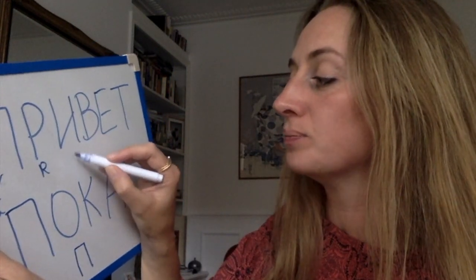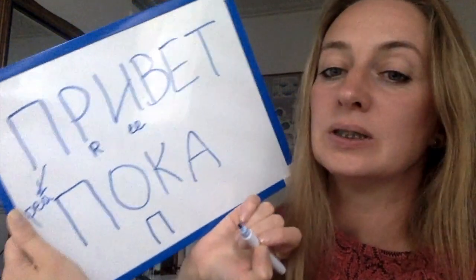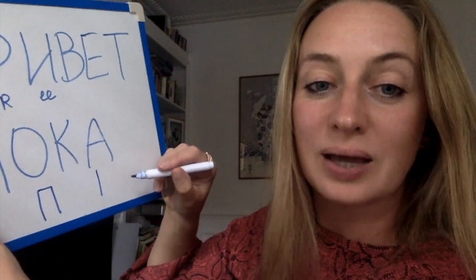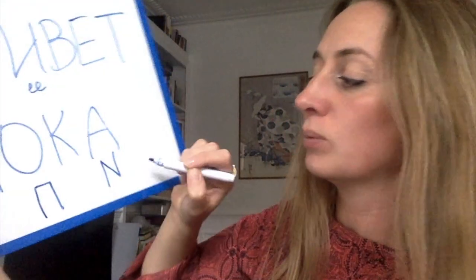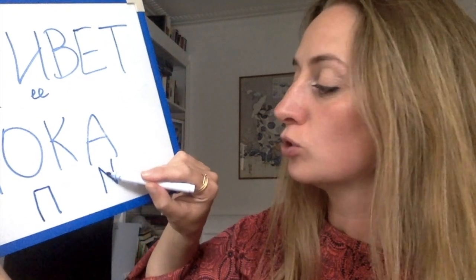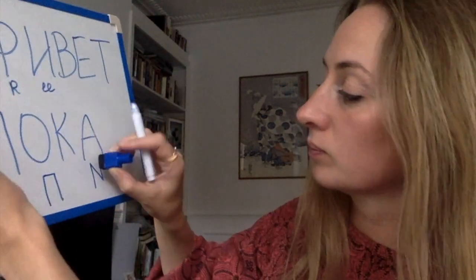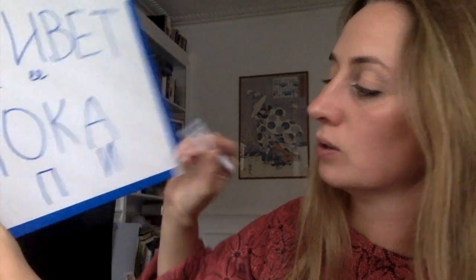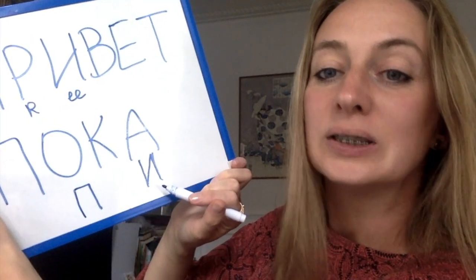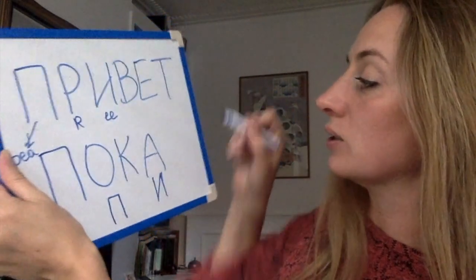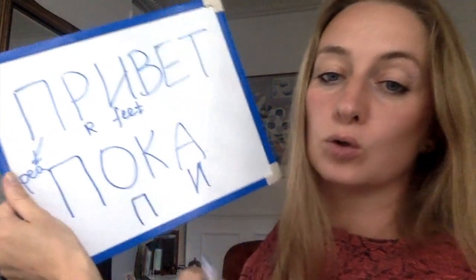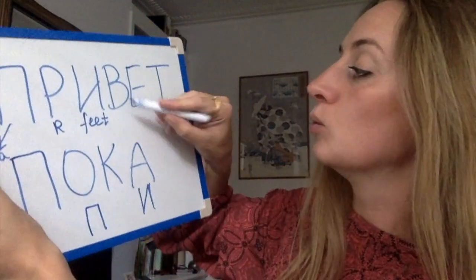The third letter is a vowel — letter И. It's like English E written reversed — like a reversed N. The sound is similar to the 'ee' in 'feet' or 'meet'. Привет.